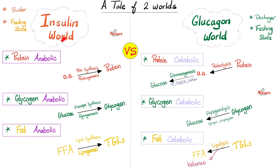Insulin is anabolic on everything: protein anabolic, glycogen anabolic, fat anabolic. Take that glucose, store it in glycogen — this is glycogen synthesis or glycogenesis. You can also convert amino acids into bigger proteins: proteogenesis or protein synthesis. Insulin will also stimulate the conversion of small free fatty acids into bigger triglycerides in a process known as lipid synthesis or lipogenesis.